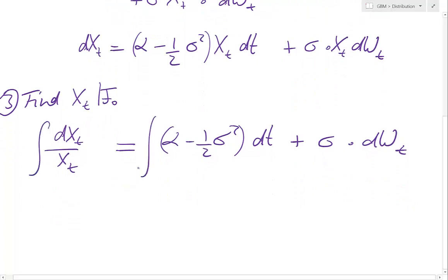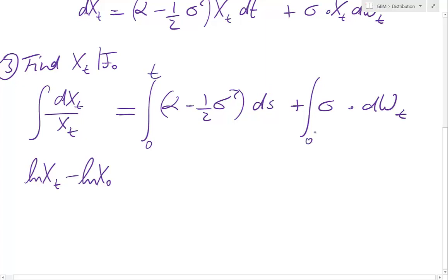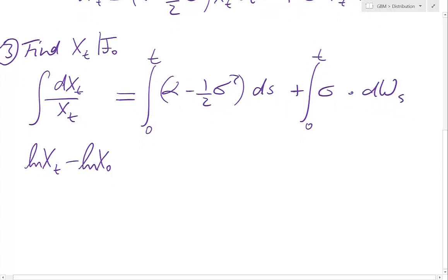So now the next thing we do is we integrate both sides, and what's the integral of 1 over Xt dXt? That is just log of Xt, and here we start in 0, so we have minus log of X0. Okay, so here we integrate from 0 to t, and we therefore, to be more accurate, change that into s.